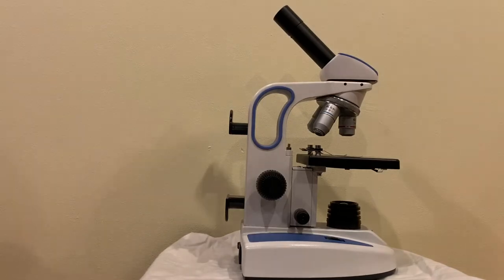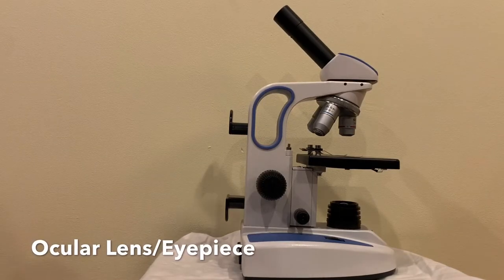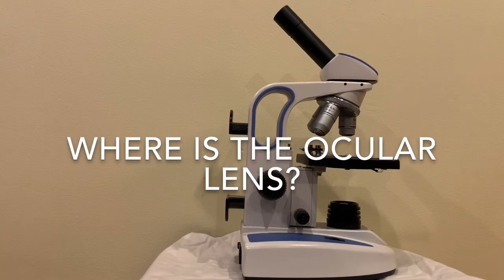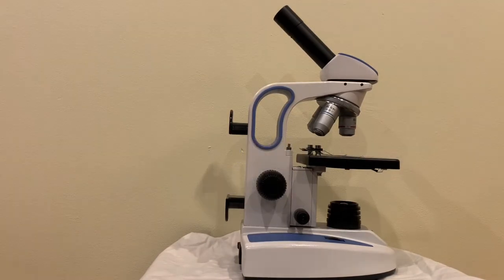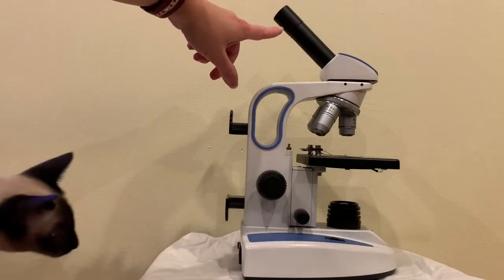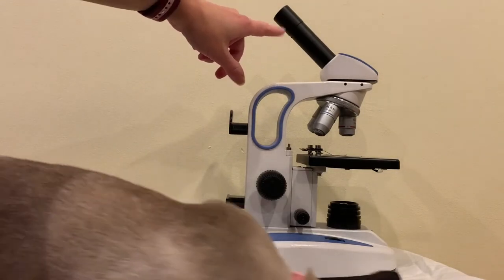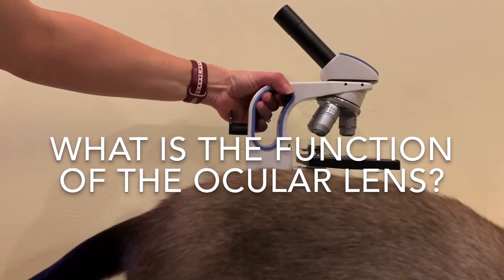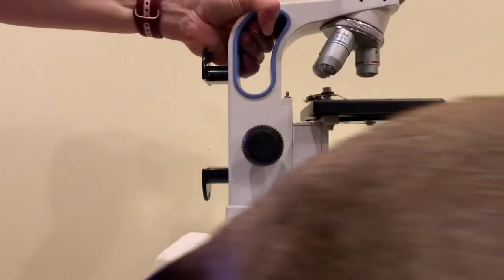Next we have the ocular lens. Where is the ocular lens? Very good. The ocular lens is up here and what do we do with the ocular lens? We look through it. Very good.